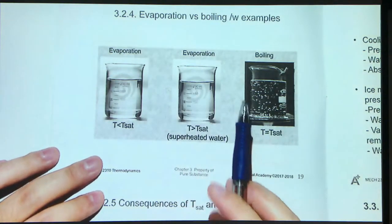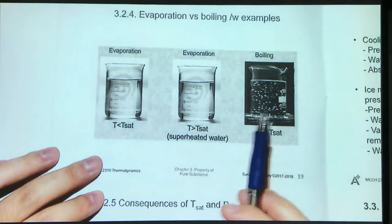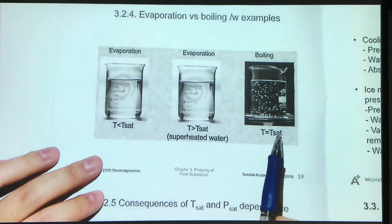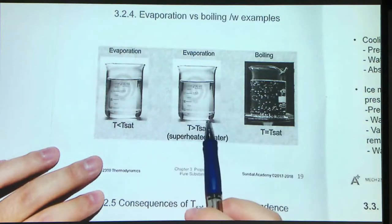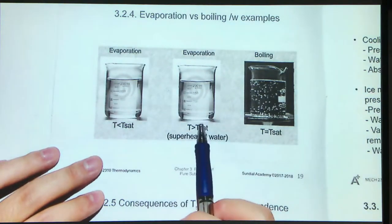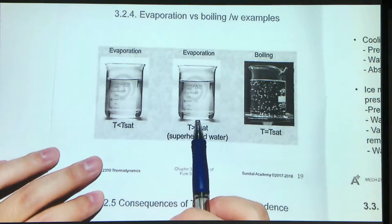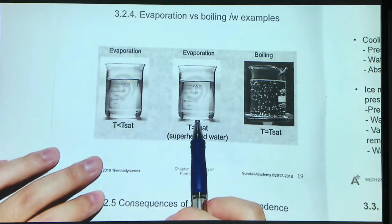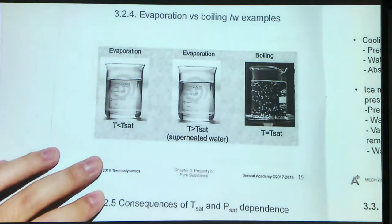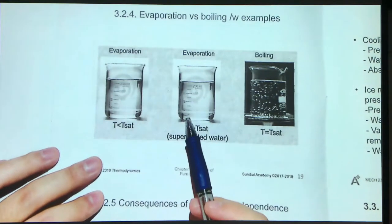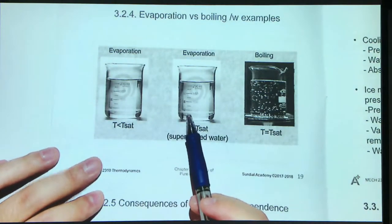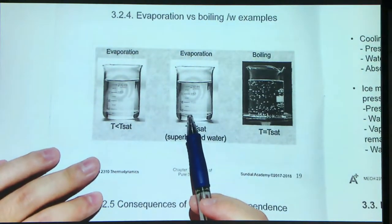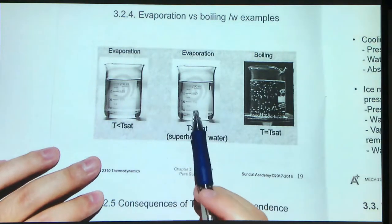For boiling, this process will exactly occur at the saturation temperature. Superheated water forms because the bubbles cannot form very well, so the liquid cannot change to the vapor phase successfully. We actually need some impurities or some roughness of the container wall to favor the formation of bubbles.